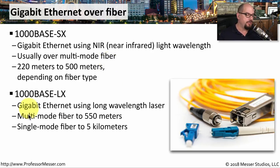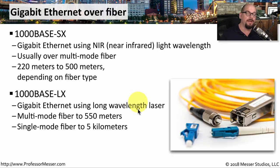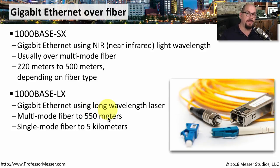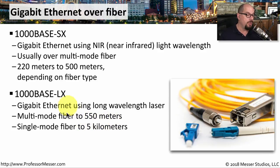For much longer Ethernet connections, you may want to use 1,000BaseLX, which is gigabit Ethernet using a long wavelength laser. You can run 1,000BaseLX over multi-mode fiber and get about 550 meters in length. But if you really need to extend the length up to 5 kilometers, you can use 1,000BaseLX over single-mode fiber.